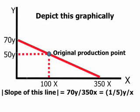The final thing to note is the slope of this line. It is 70Y over 350X, the rise over the run. Another way to depict that is that it is one-fifth Y for every X. That is the absolute value of the slope of this line.